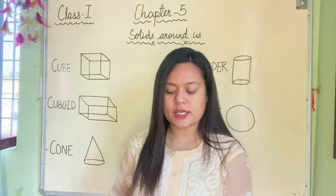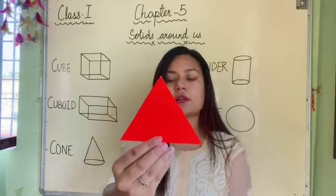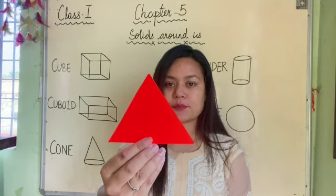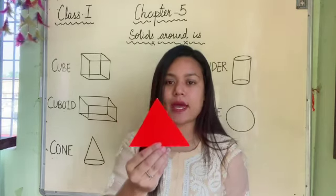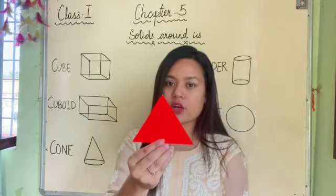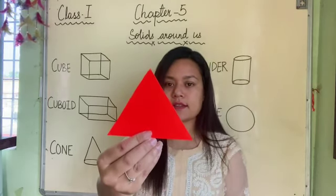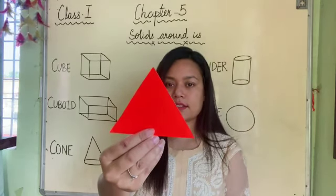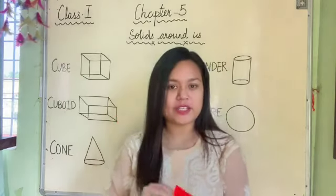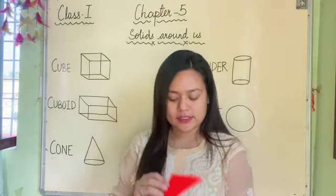Now, the last shape. Can you guess which shape is this? This shape has three sides and three corners. Tell me which shape is this. Triangle. Very good, children. It is triangle.